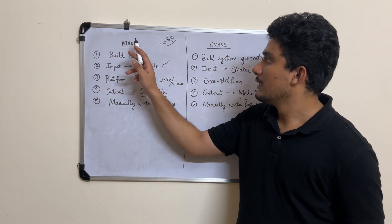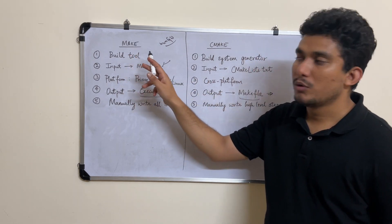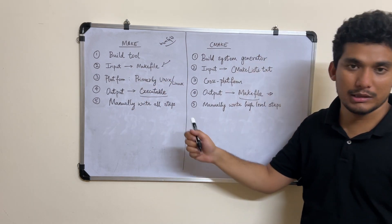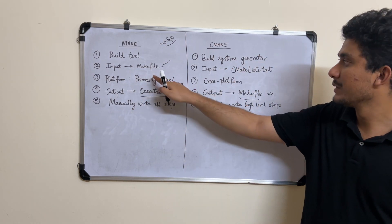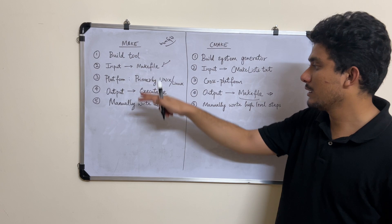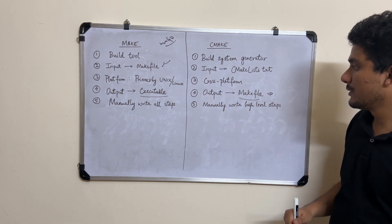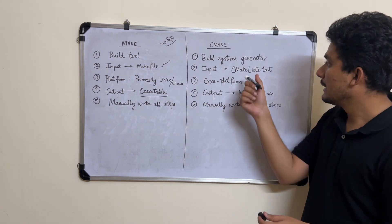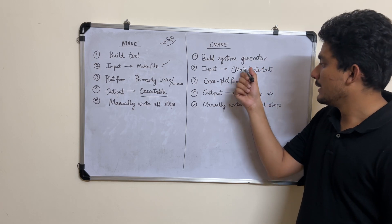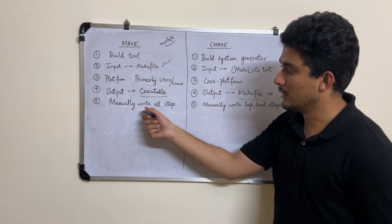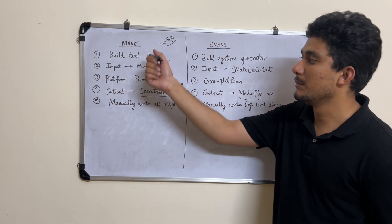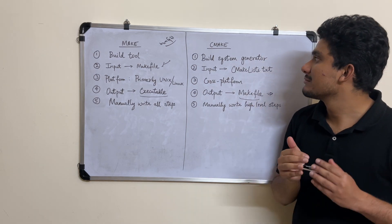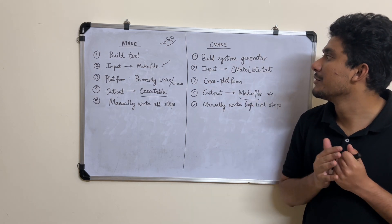Finally, for Make to work, you have to write all the steps manually in the Makefile. With CMake, you just write high-level steps in the CMakeLists.txt, which generates the Makefile with all the steps written, and then Make builds your executable. That's the difference between Make and CMake.